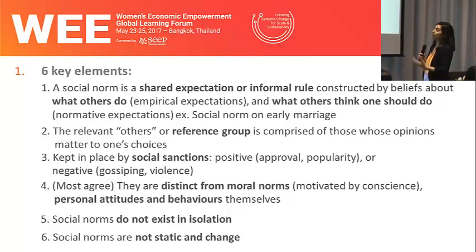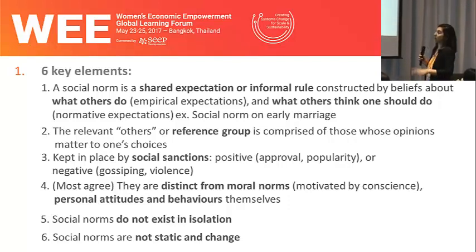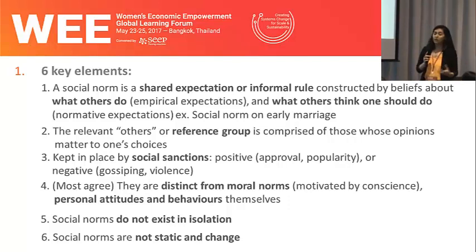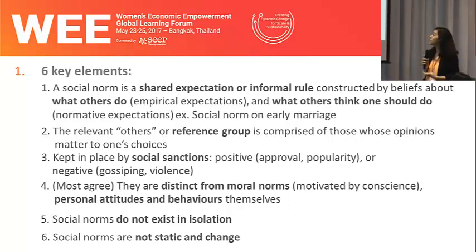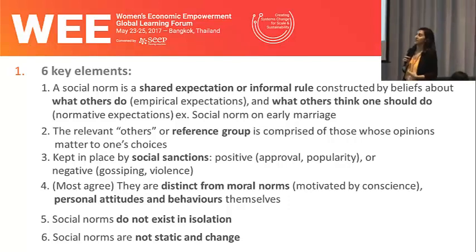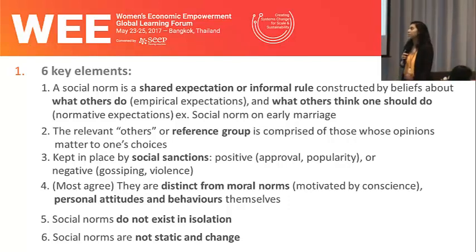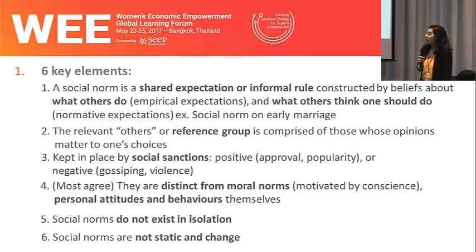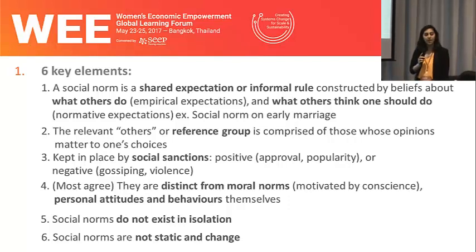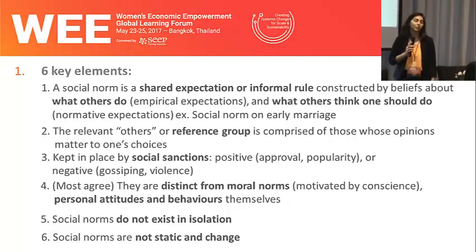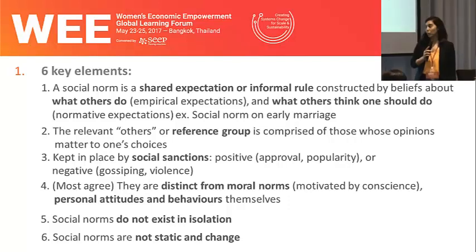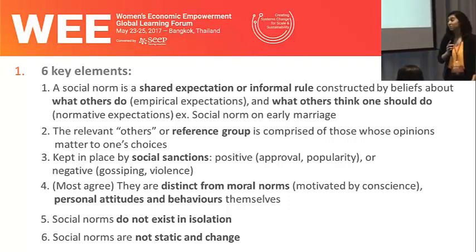Social norms exist within a reference group, or the relevant others that we care about. This reference group is comprised of those whose opinions matter the most to one's choices. So in our example of early marriage, this could be our neighbors, the wider community, or influential religious leaders. Social norms are kept in place by social sanctions, which can be both positive — in the form of approval, popularity, a sense of belonging, a sense of shared identity — or negative when one fails to comply, such as gossiping or, in extreme cases, violence.